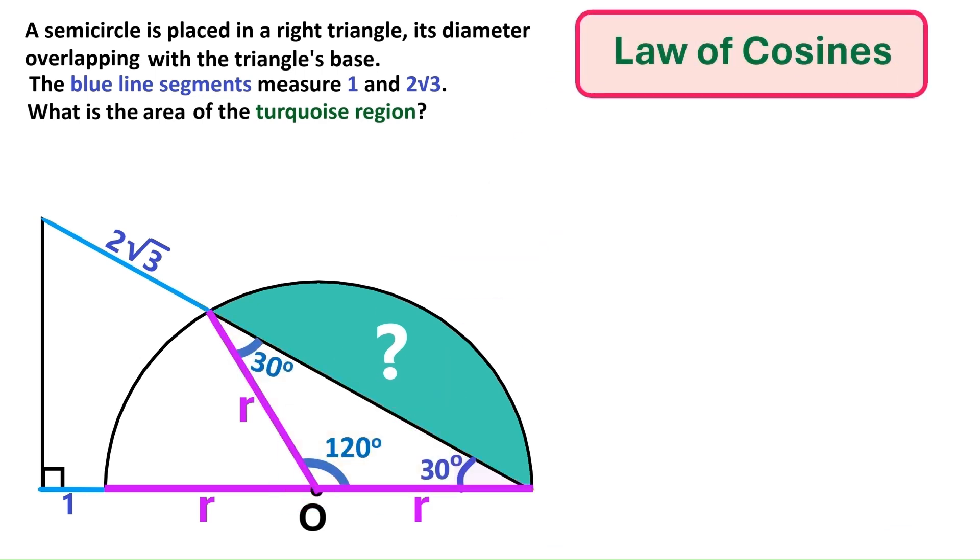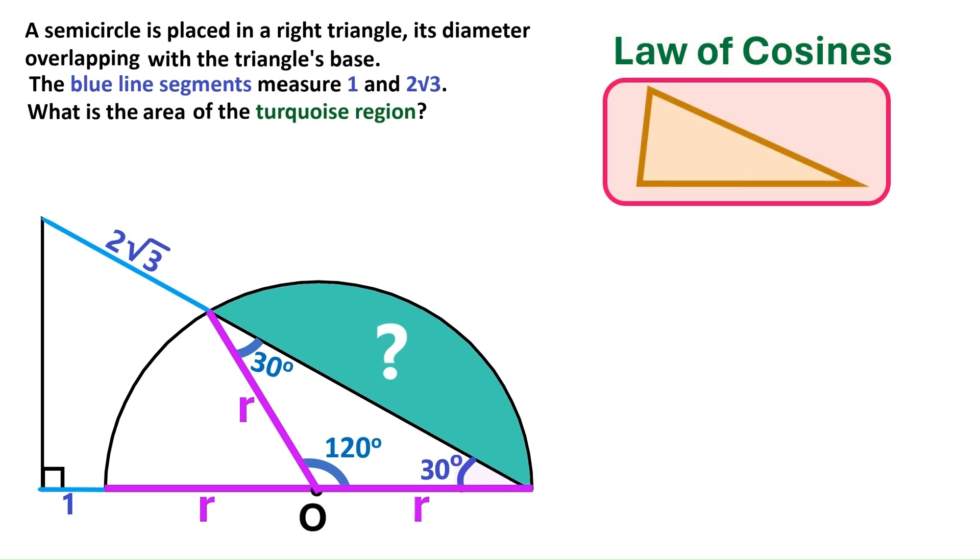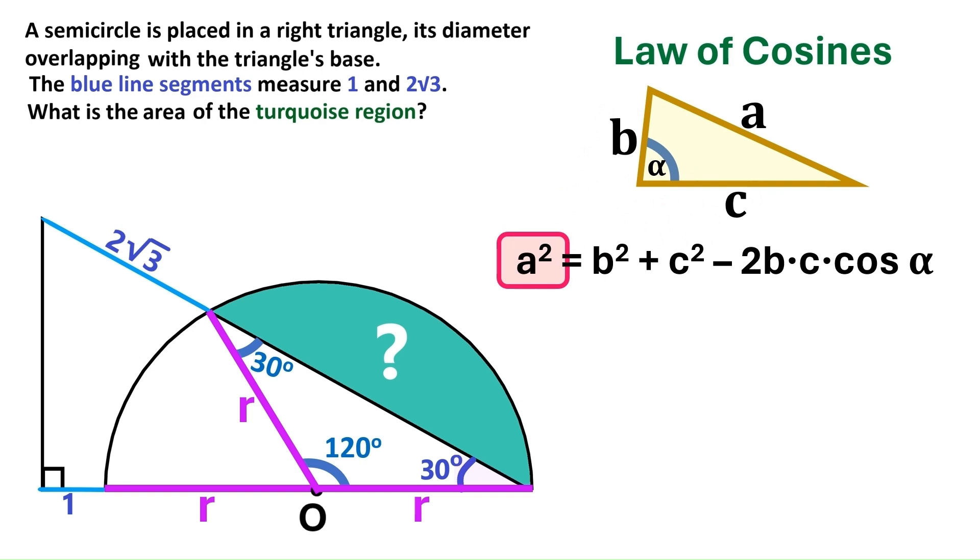Now I'm going to show you a super handy trick formula called the law of cosines. Let's say this triangle has this angle alpha and the side opposite the angle alpha is A and the adjacent sides are B and C. According to the law of cosines, A squared equals B squared plus C squared minus two times B times C times cosine alpha.